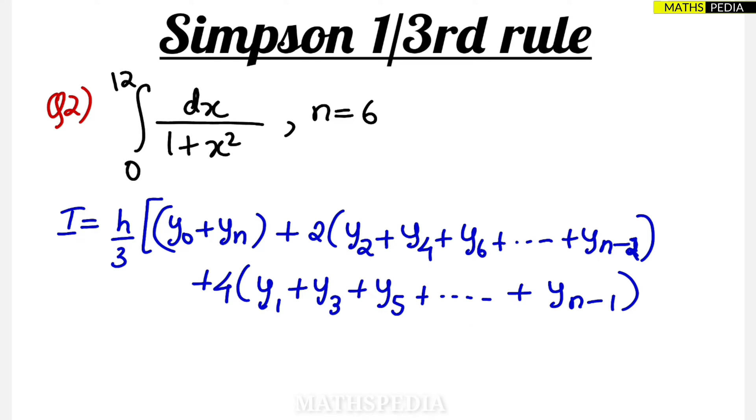The restriction for Simpson one-third rule is nothing but that n value should be multiple of 2. So 2, 4, 6, 8 so on. So here you can see that two's multiple is already taken in the formula. So like that also you can remember that the restriction for this formula is nothing but interval should be two's multiple.